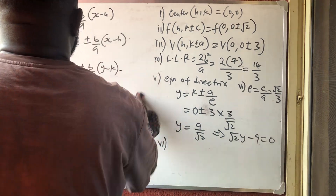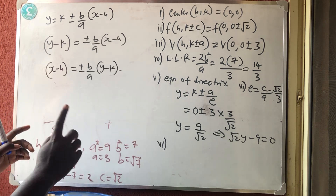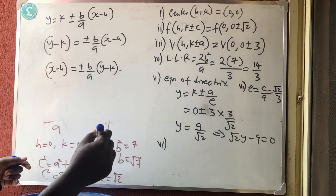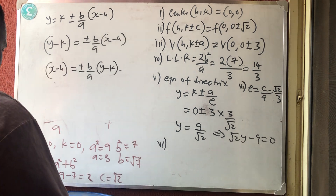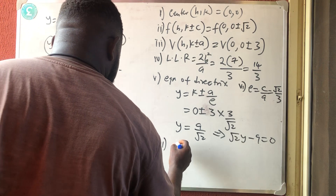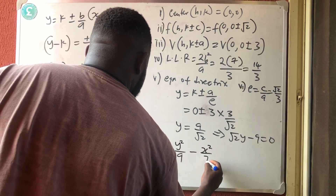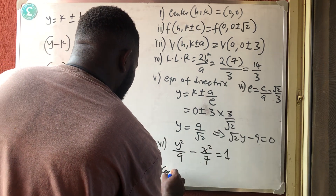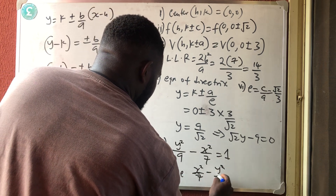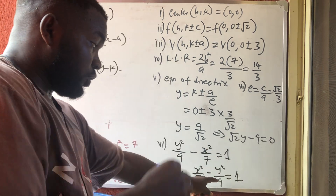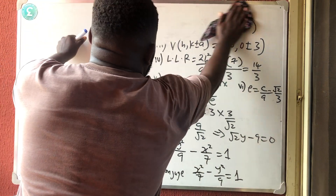The conjugate of this hyperbola: the original equation was y²/9 − x²/7 = 1. The conjugate is obtained by swapping the two terms completely, giving x²/7 − y²/9 = 1. In hyperbola, the conjugate swaps the entire terms, not just the denominators as in ellipse.